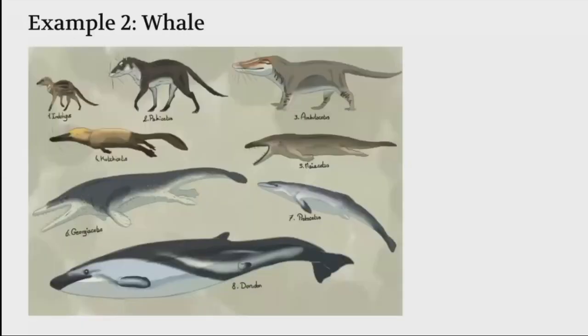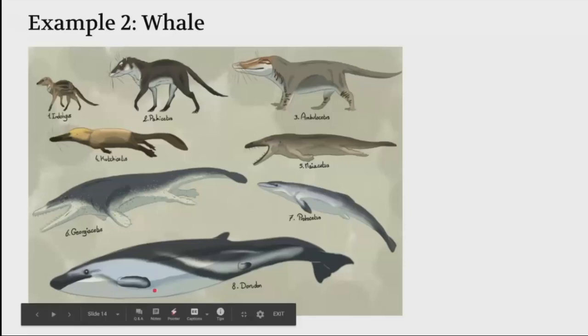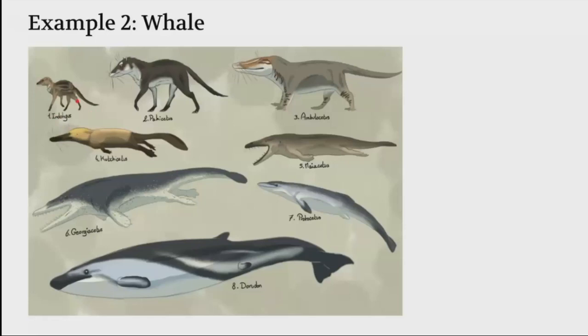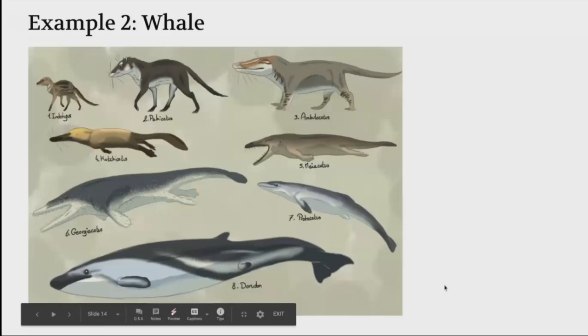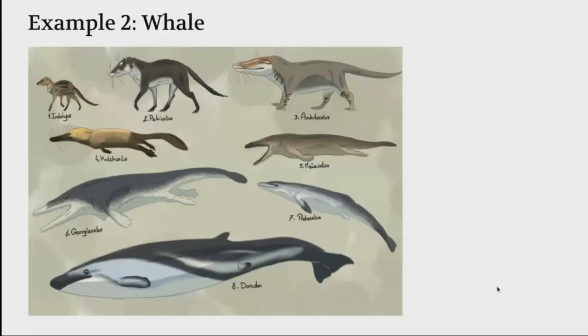The second one is a whale. It starts right here with the Indohyus. As it's growing larger in size, it's also becoming a land animal into an ocean aquatic animal. It's known as the Dorudon, what we know today as a whale.